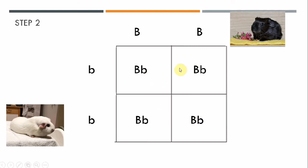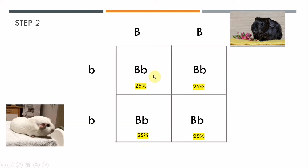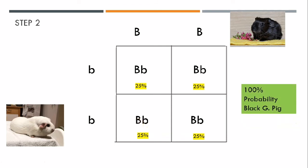Now, imagine this square — it represents 100%, divided into 4 parts. 100 divided by 4 is 25, so each square represents 25%. In this particular case, they are all going to be black. So we can say there is a 100% probability that the offspring of these two guinea pigs are going to be black guinea pigs.